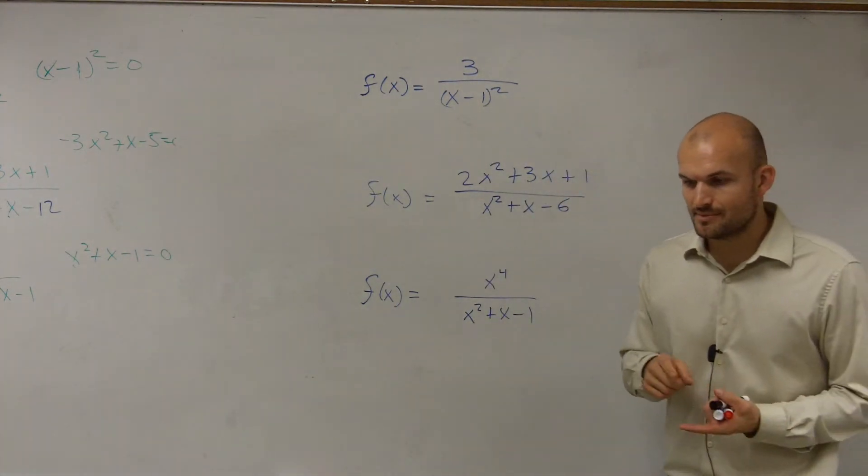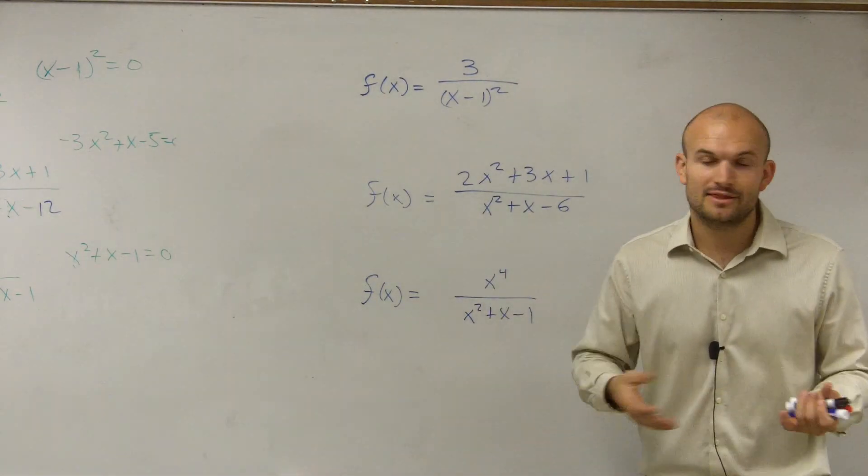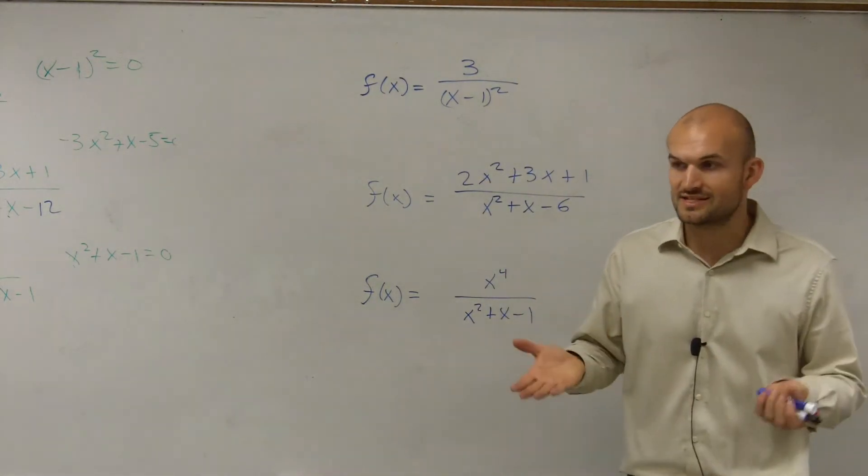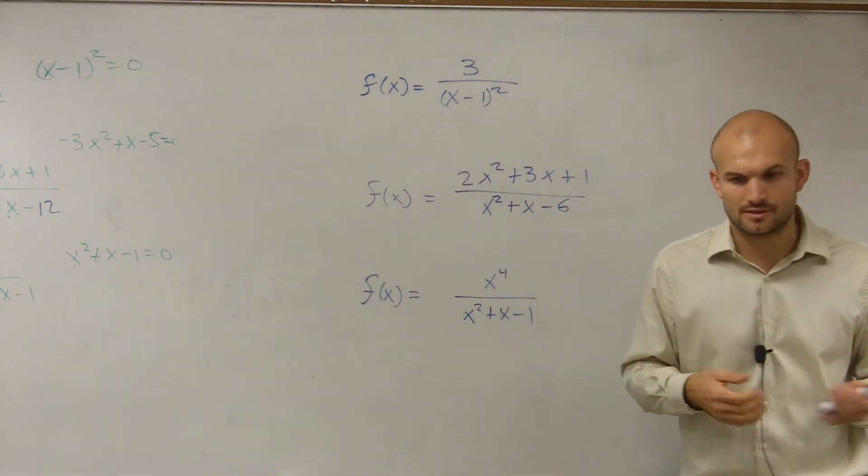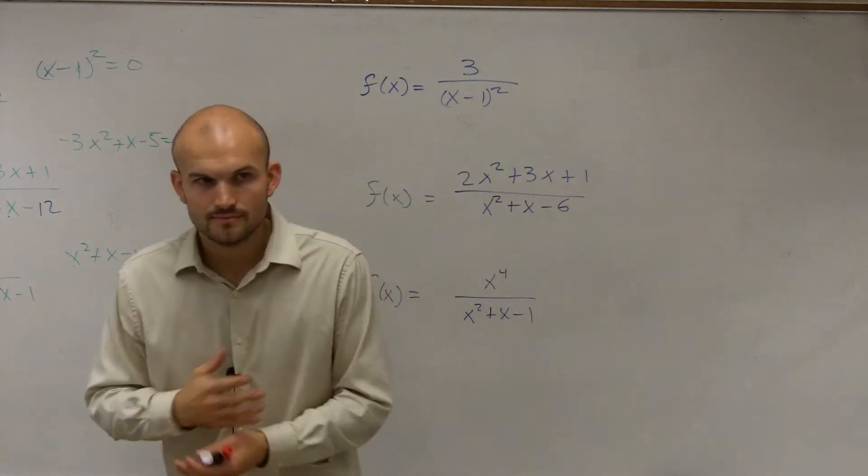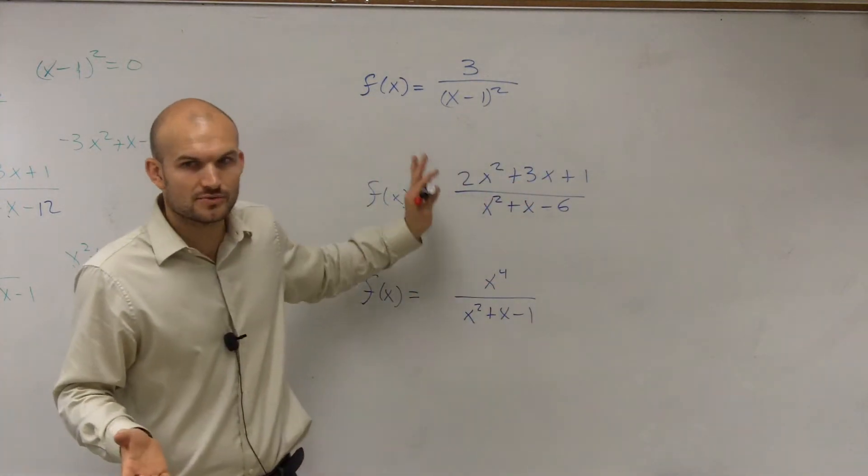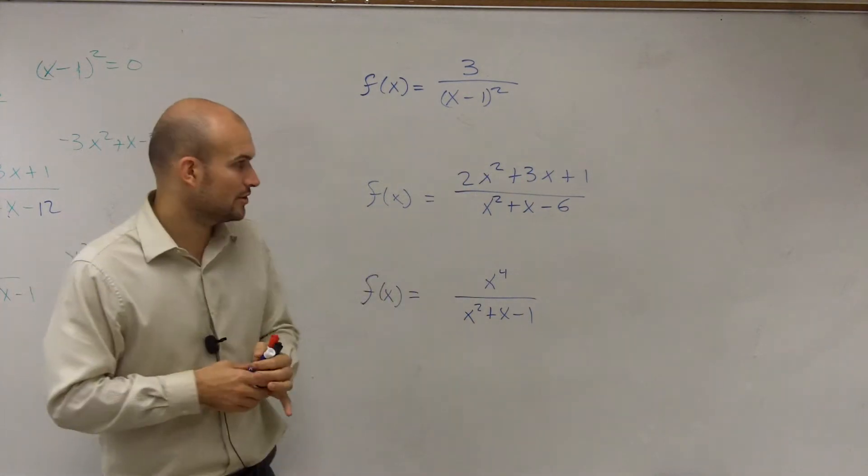Remember when we talked about vertical asymptotes, we talked about domain. And the domain is the set of all x values that make up your function. When dealing with rational functions, your domain is going to be all real numbers. For the functions we're going to be dealing with, it's always going to be all real numbers.